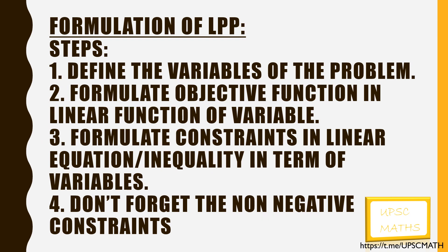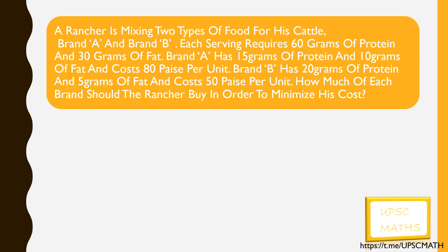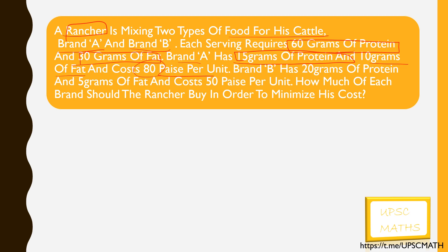We will solve a problem to understand the steps better. The question is: a rancher is mixing two types of food for his cattle, Brand A and Brand B. Each serving requires 60 grams of protein and 30 grams of fat. Brand A has 15 grams of protein and 10 grams of fat and costs 80 paise per unit. Brand B has 20 grams of protein and 5 grams of fat and costs 50 paise per unit. How much of each brand should the rancher buy in order to minimize his cost?